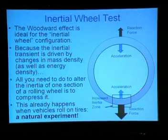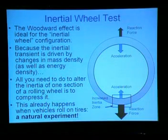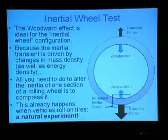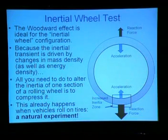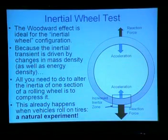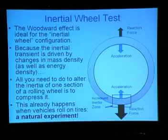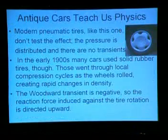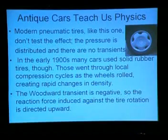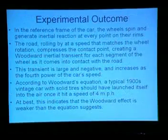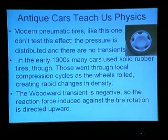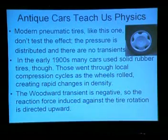The Woodward effect seems ideal for the inertial wheel configuration. Because the inertial transient is driven by changes in mass density, all you need to alter one section of a rolling wheel is to compress it. And when does one section of a rolling wheel get compressed? When ground vehicles roll on tires — we've had a natural experiment in the world for over a century. Modern pneumatic tires don't test the effect since pressure is distributed with no transients. However, in the early 1900s many cars used solid rubber tires, providing a potential natural test case.